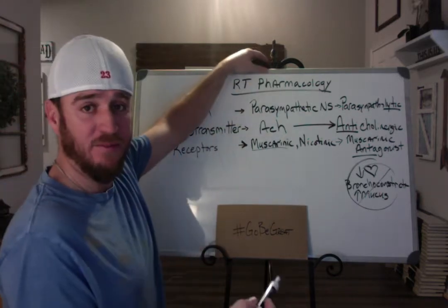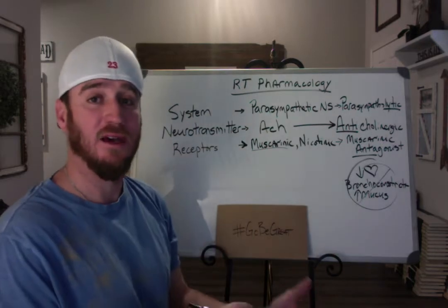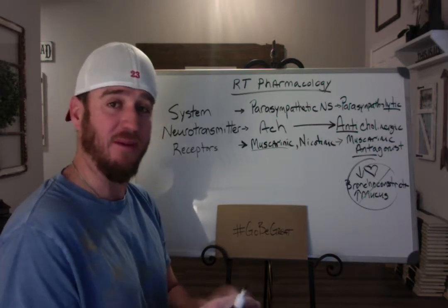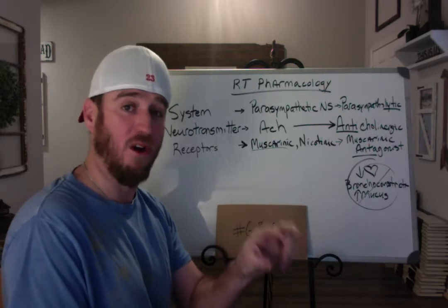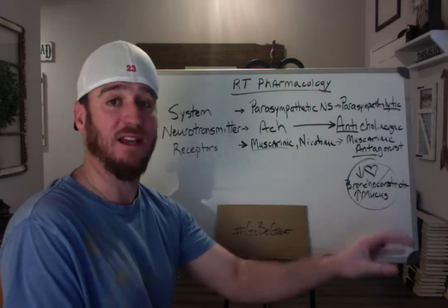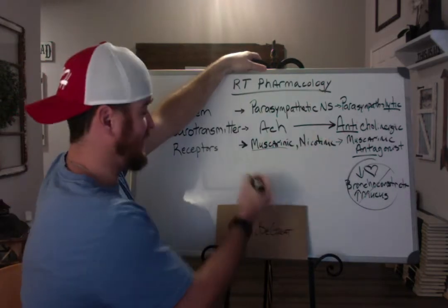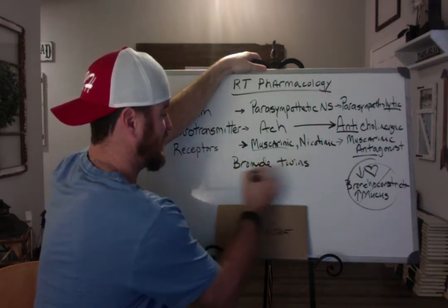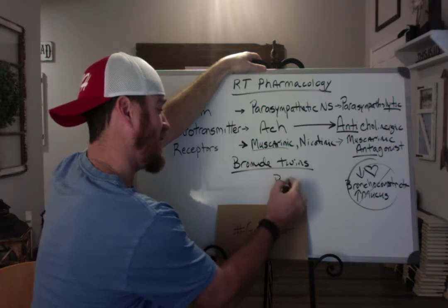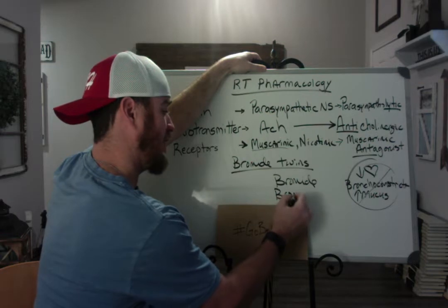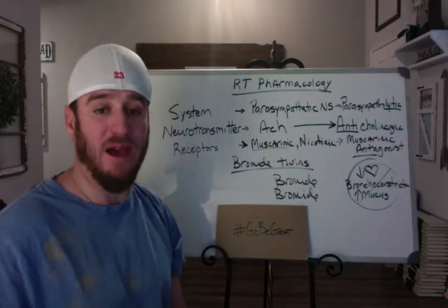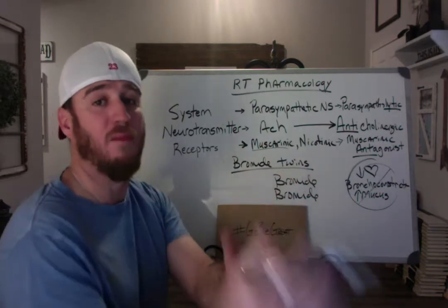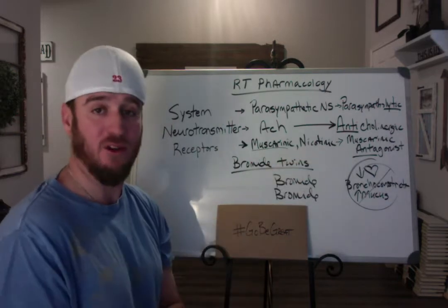Some people break these down into short-acting and long-acting muscarinic antagonists. I'm going to talk about the two big ones in current RT pharmacology. When you think about parasympatholytics, think about what I call the bromide twins. If you ever see the word bromide, you're talking about a parasympatholytic. If you look up a drug and it says something bromide, you immediately know you're talking about an anticholinergic.